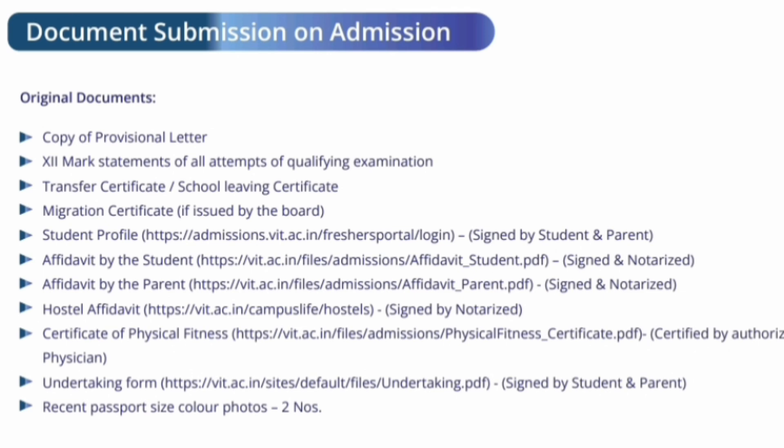You also need to create your student profile on the admissions.vit.ac.in freshers portal login, assigned by student and parents. Additionally, bring an affidavit signed by the student — this is an anti-ragging undertaking — and a similar affidavit signed by parents, both notarized by a legal person. Two affidavits are required in total.